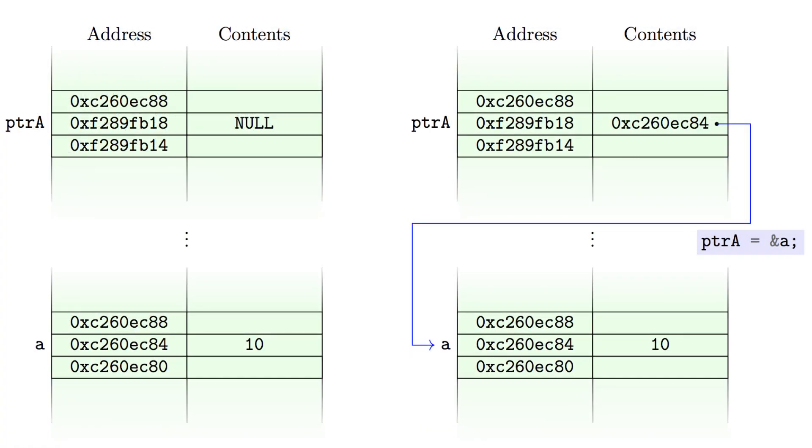Here's a visualization of this phenomenon. We have a pointer stored in a memory location, and initially its contents are null. We also have a variable A stored at a memory location. Initially its contents are 10.